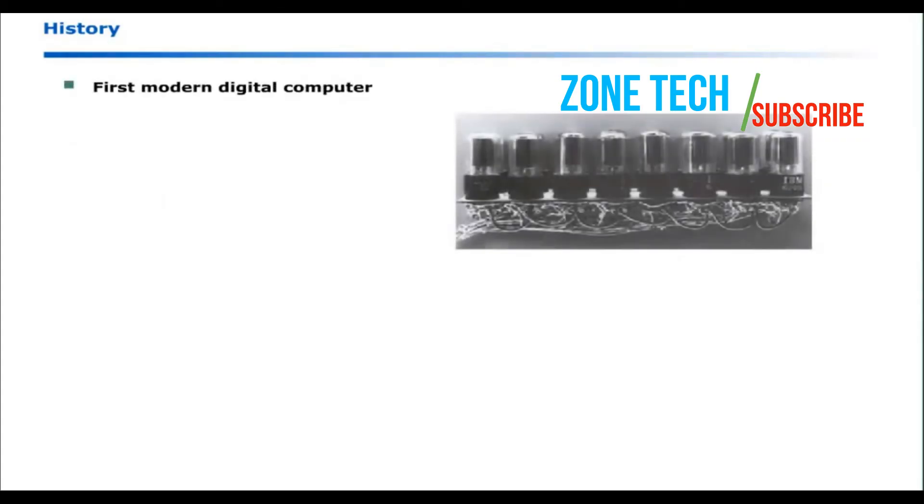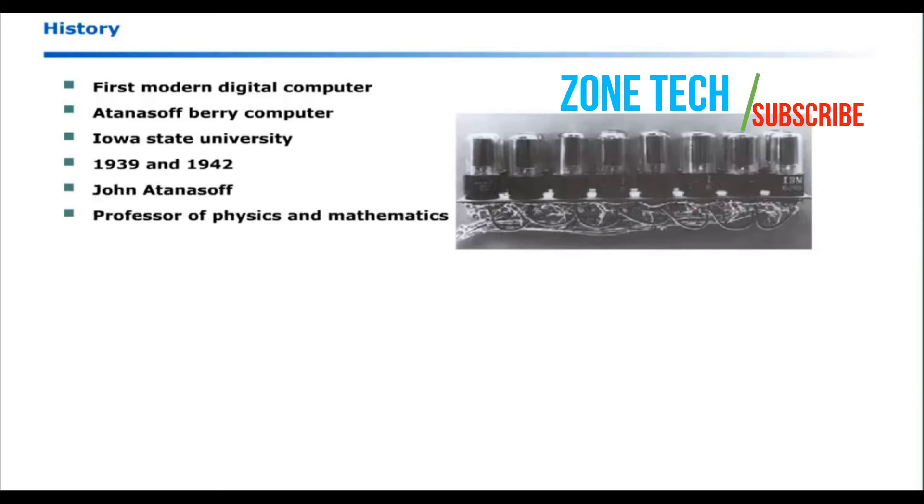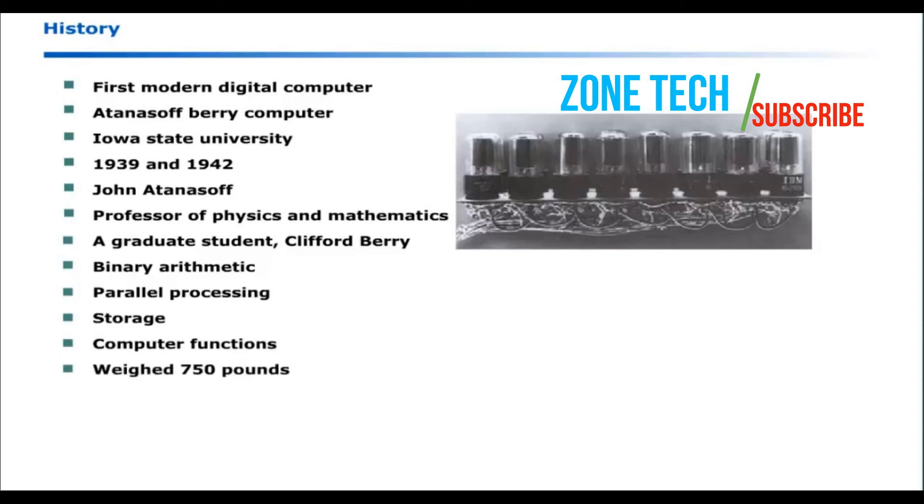The first modern digital computer, Atanasoff-Berry computer, was built in Iowa State University campus between 1939 and 1942. The development team was led by John Atanasoff, professor of physics and mathematics and a graduate student Clifford Berry. This machine included many features like binary arithmetic, parallel processing, storage and computer functions. It weighed about 750 pounds and could store about 3000 bits of data.